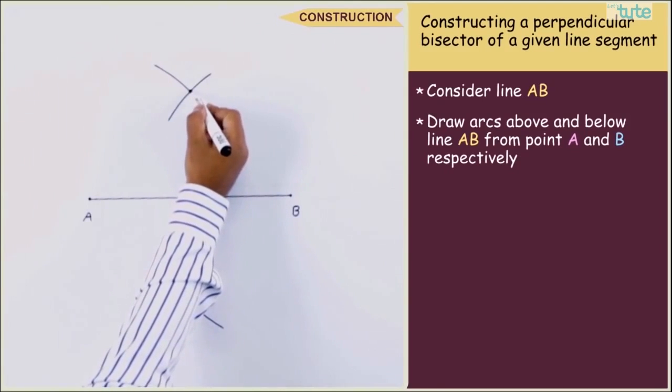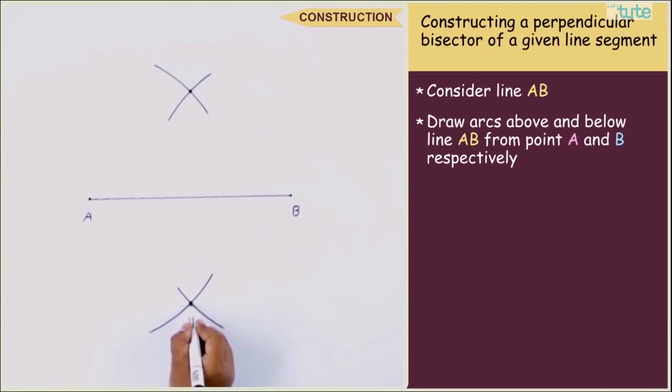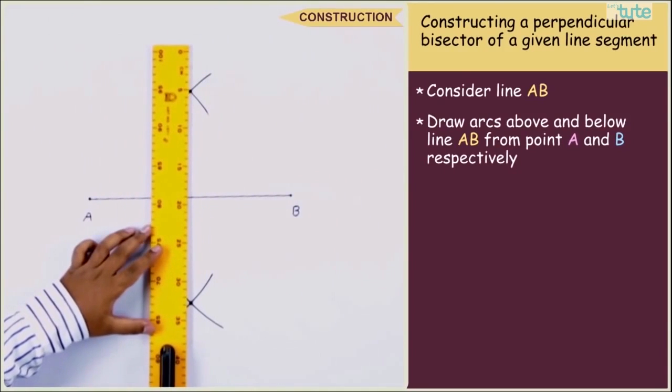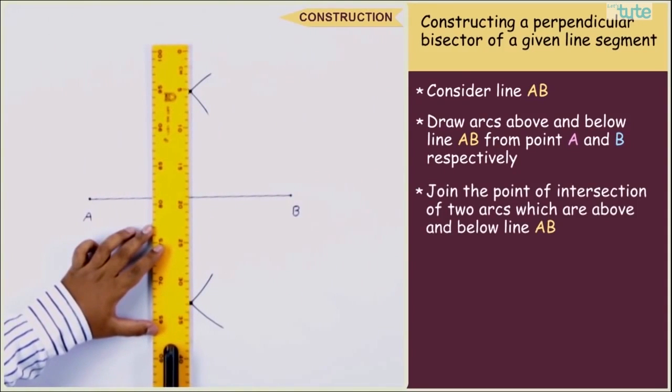Now mark the points of intersection of the arcs which we have drawn. Join these two points by drawing a straight line passing through these points.